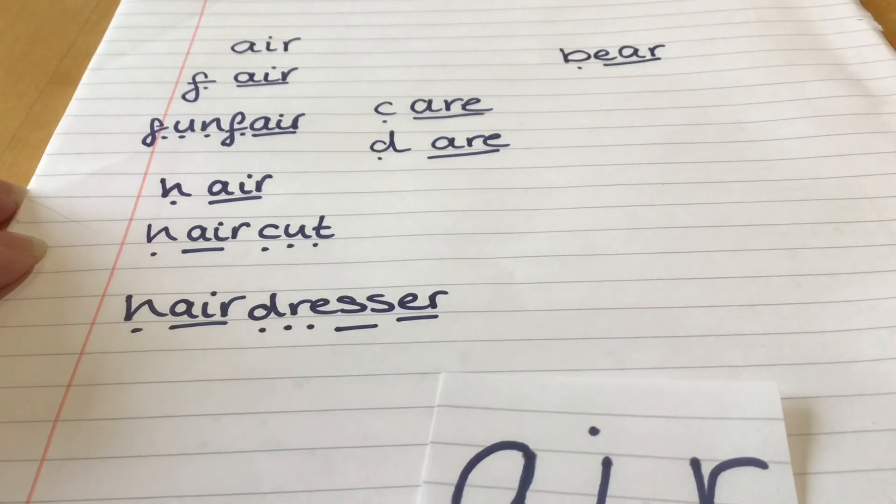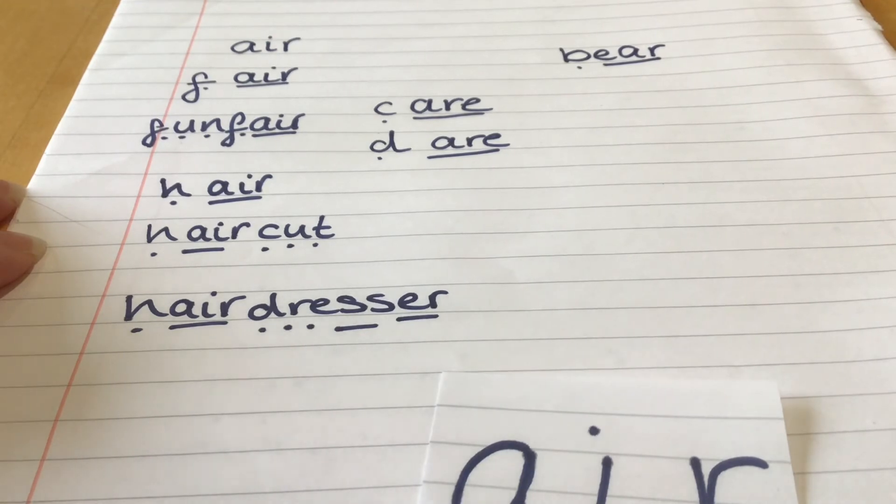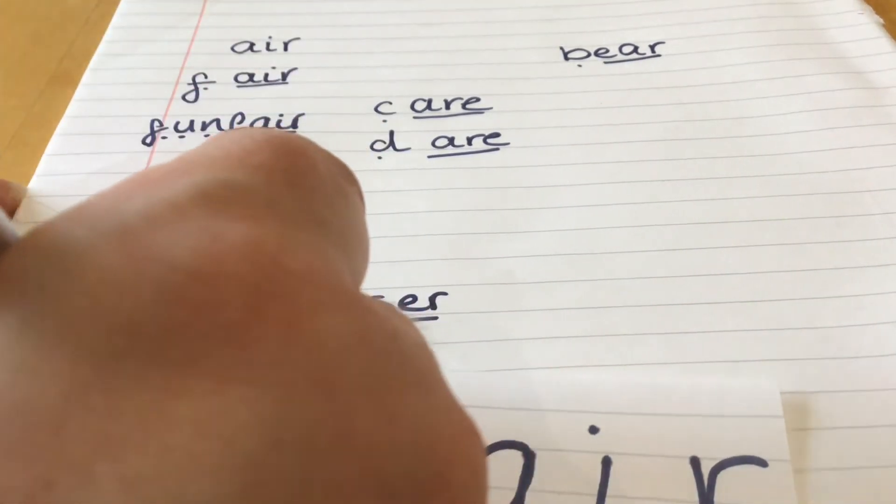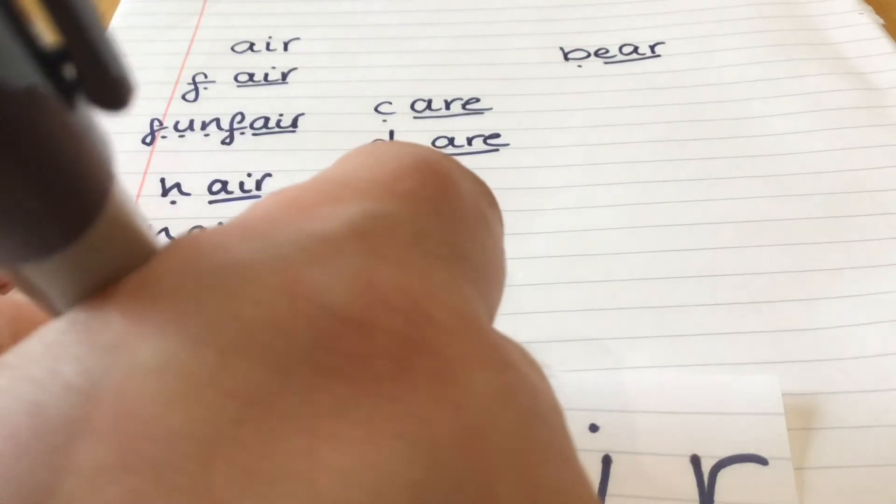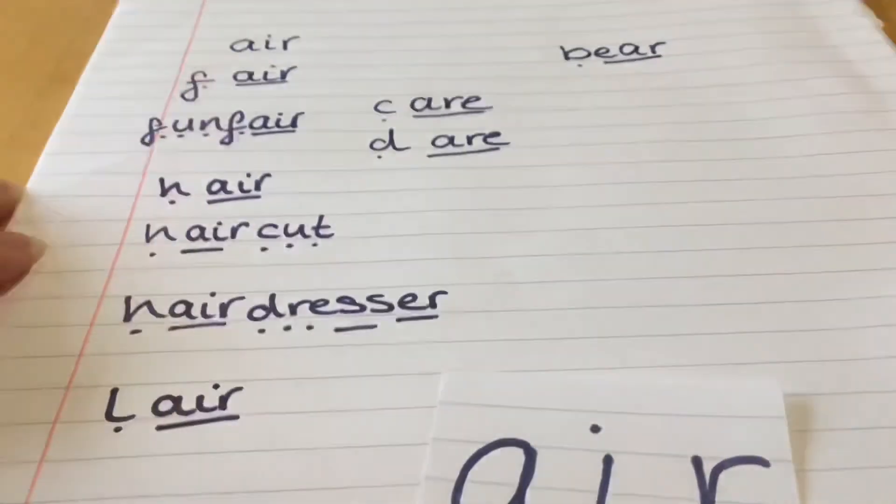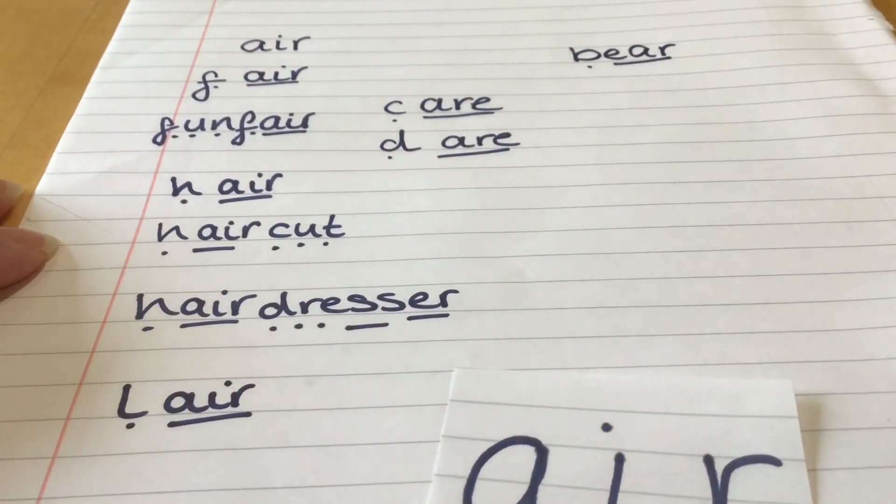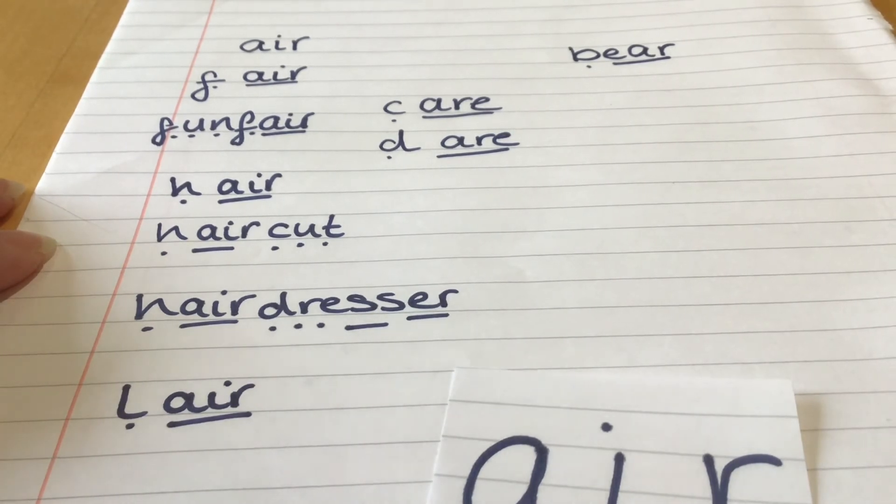A, B, C, D, E, F, G, H, I, J, K. Lair. Lair. Do you remember the monster's lair? A, B, C, D, E, F, G, H, I, J, K, L, M. Mare, mare. It's a girl horse, isn't it? A mare.